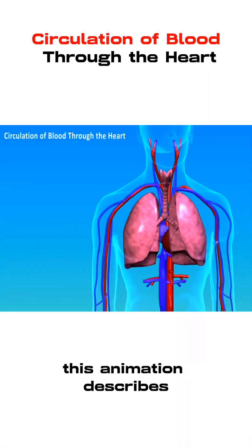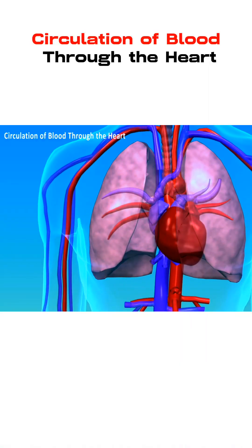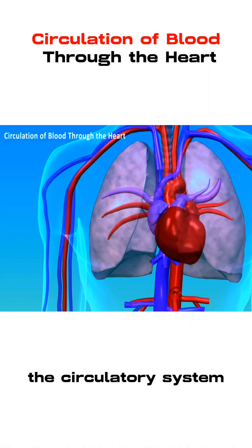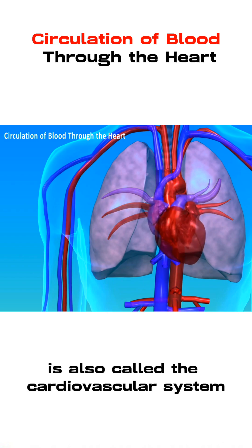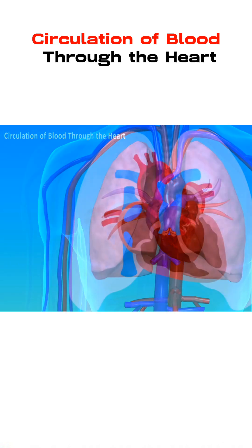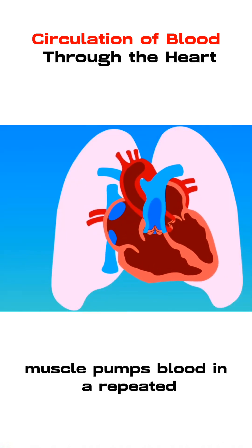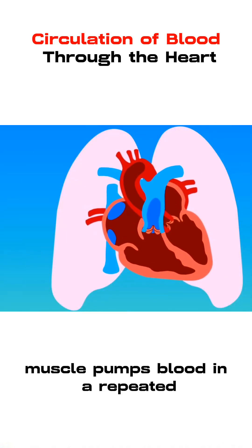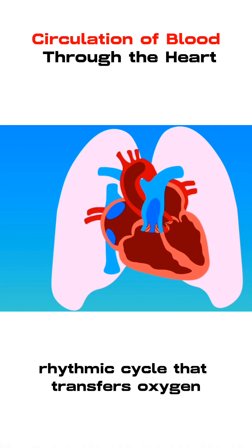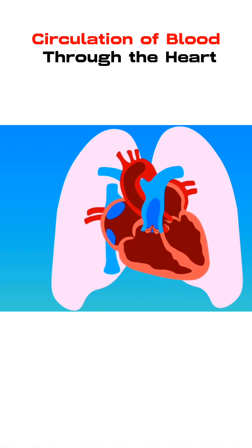This animation describes the circulation of blood through the heart. The circulatory system is also called the cardiovascular system, or simply the vascular system. Our four-chambered heart muscle pumps blood in a repeated, rhythmic cycle that transfers oxygen and nutrients throughout the whole body.